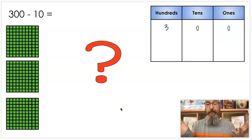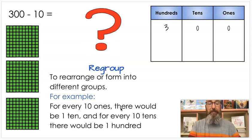So the question is it says subtract 10. Do you see any tens? I don't either. But let's remember what it means to regroup. When you regroup you rearrange or form into different groups. And for every 10 tens we have 100. Which means for every 100 I have 10 tens.